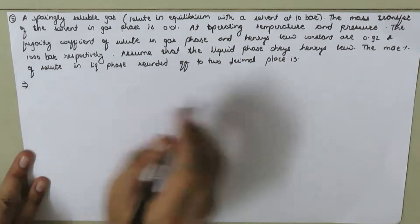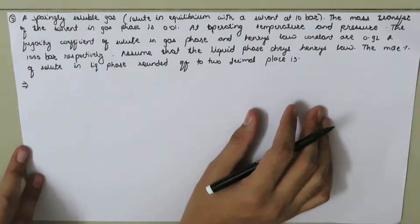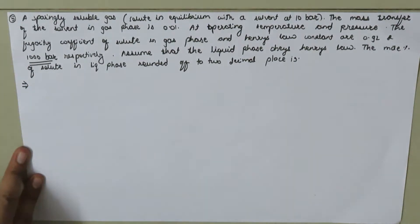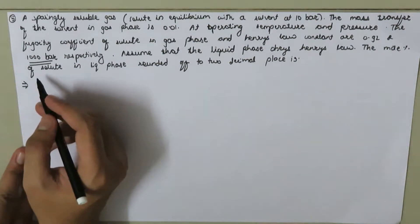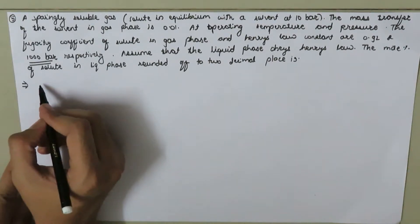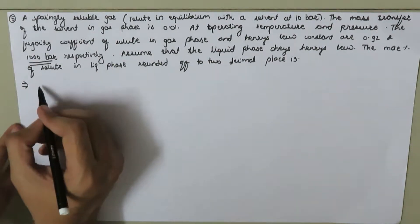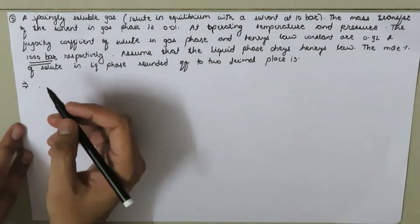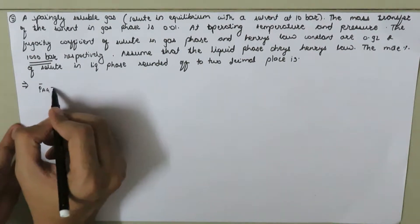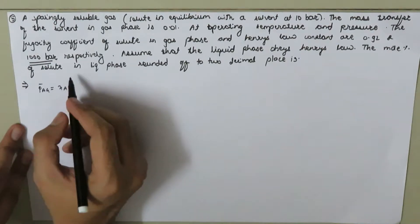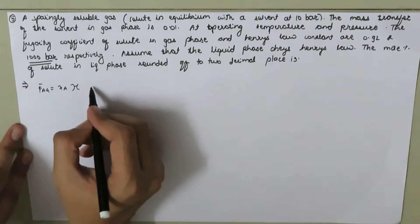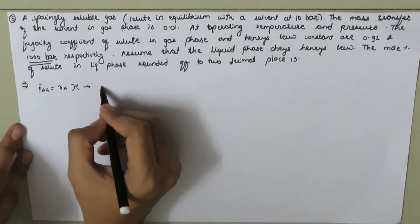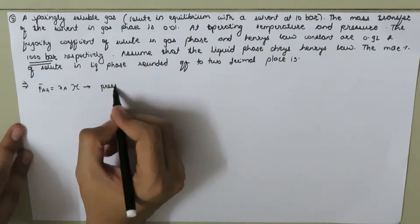First, we focus on the dimensions of the Henry's law constant, which are dimensions of pressure. This equation can be expressed in three forms. The first form: the partial pressure P_AG is equal to the mole fraction times the Henry's constant, where the dimensions of the Henry's constant are equivalent to the dimensions of pressure.